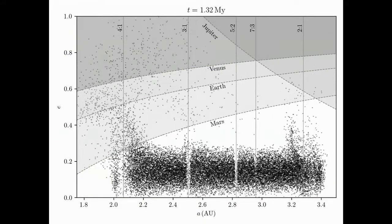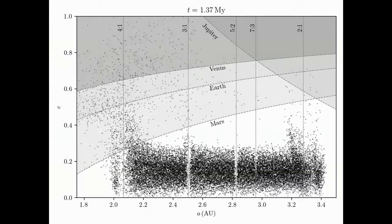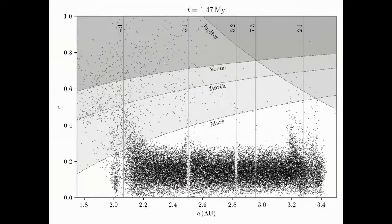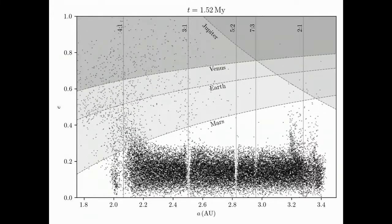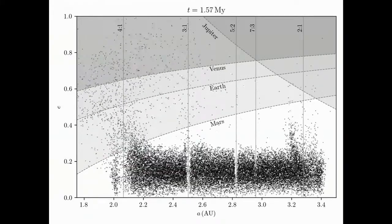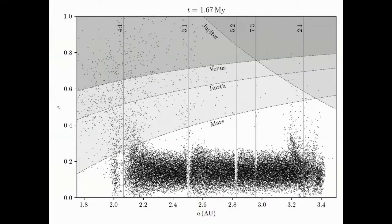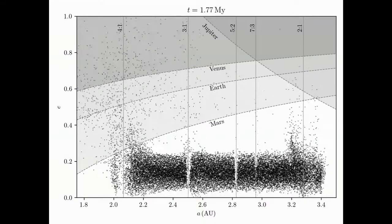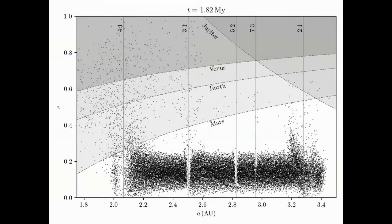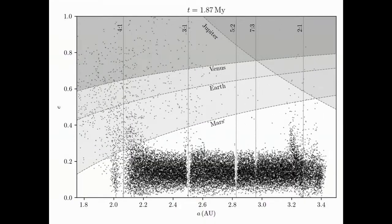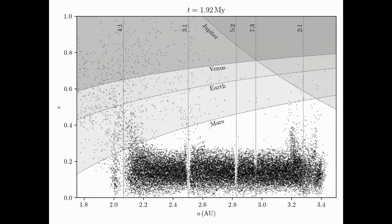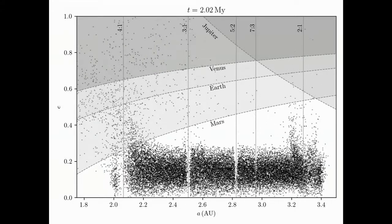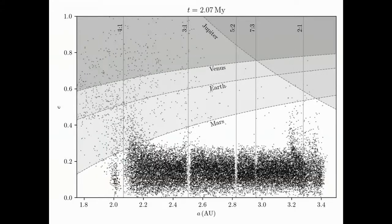After half a million years, gaps start to be visible in correspondence of the main mean motion resonances in the belt, where the asteroids' eccentricities increase to planet-crossing values. As the simulation progresses, the gaps become more defined.